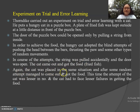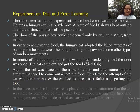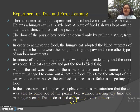Again the cat was placed in the same situation, and after some random attempts, managed to come out and got the food. This time, the number of attempts was lesser, and the cat had to face fewer failures in getting the food. In successive trials, the cat was placed in the same situation and was able to come out of the puzzle box without wasting any time and making any error. So this is described as learning by trial and error.